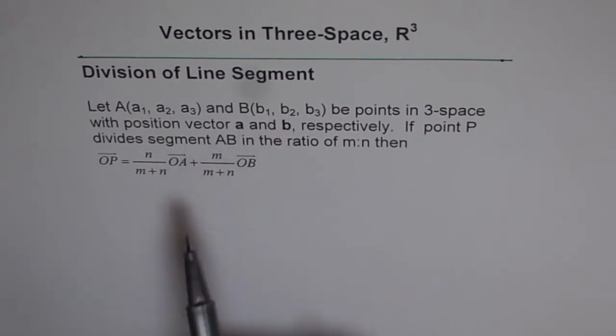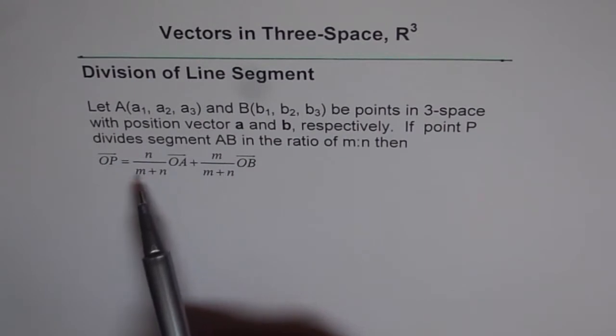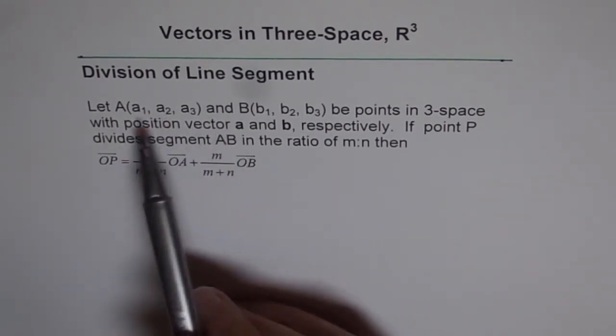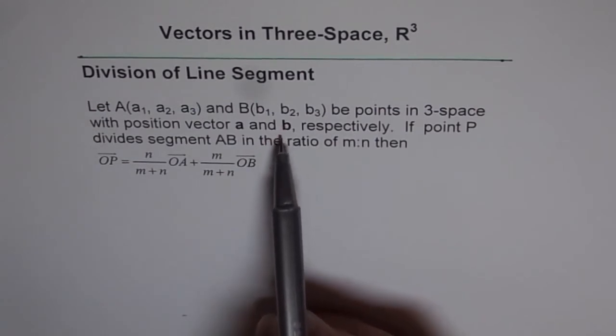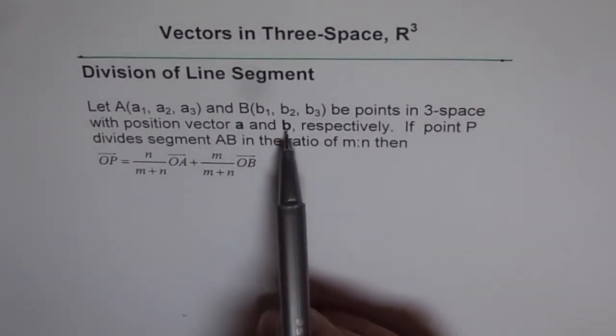And position vector is that if we join the line from origin to A, so that gives us the position vector a. And if I join origin O to B, then that is b, the position vector.